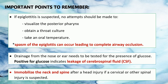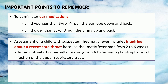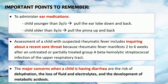Immobilize the neck and spine after a head injury if a cervical or other spinal injury is suspected. To administer ear medications in a child younger than age 3, pull the earlobe down and back. In a child older than 3 years, pull the pinna up and back. Assessment of a child with suspected rheumatic fever includes inquiring about a recent sore throat, because rheumatic fever manifests 2 to 6 weeks after an untreated or partially treated group A beta-hemolytic streptococcal infection of the upper respiratory tract. The major concerns when a child has diarrhea are the risk of dehydration, loss of fluid and electrolytes, and the development of metabolic acidosis.